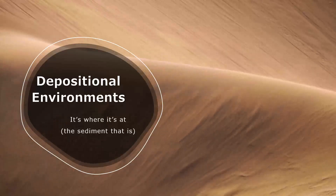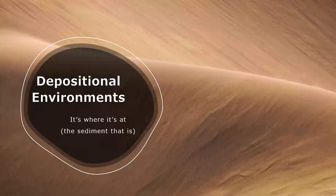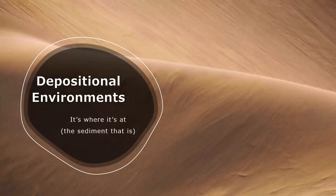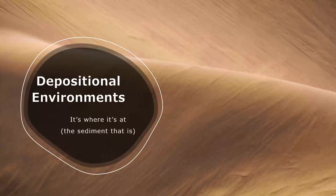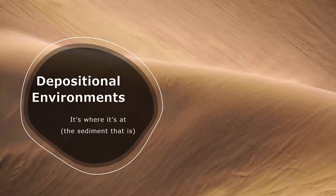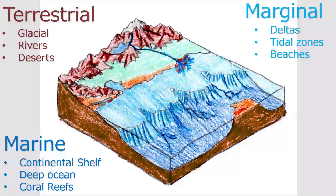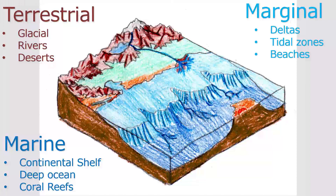This is the place where the sediment was deposited after it got broken off and carried away. There are many kinds of depositional environments, but you can generally think of them as being terrestrial — on land — marine, which is the ocean, and marginal marine, which is sort of the shallower in-between places.